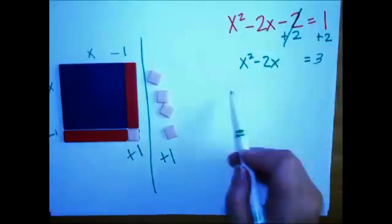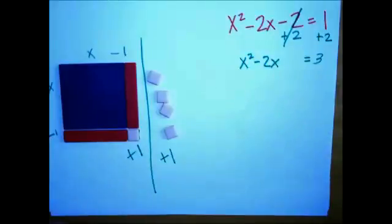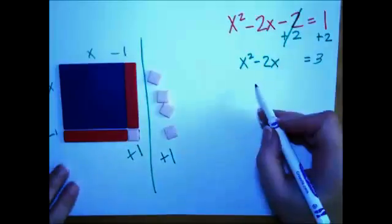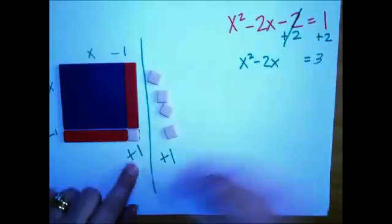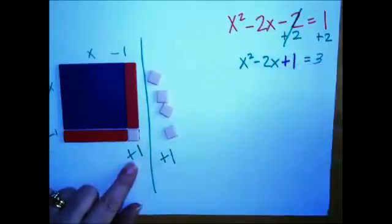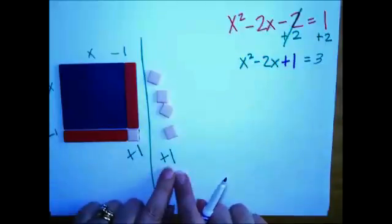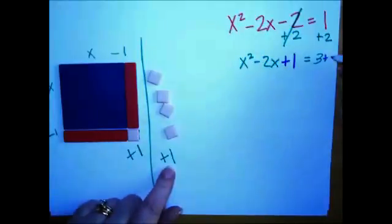So let's see how that's going to be written algebraically. So we've got, we added one. Let's show it here. And of course, to balance it, we added one to the right side.